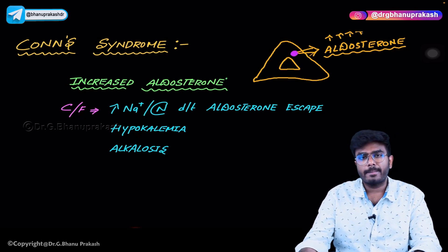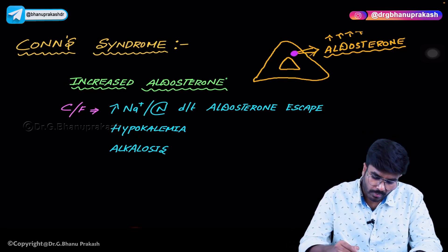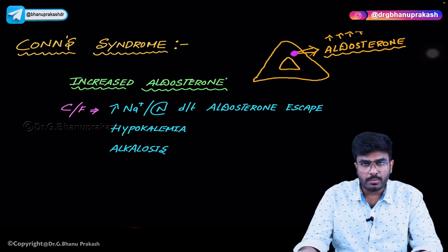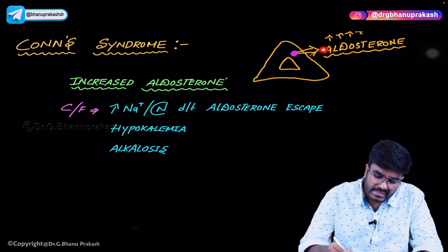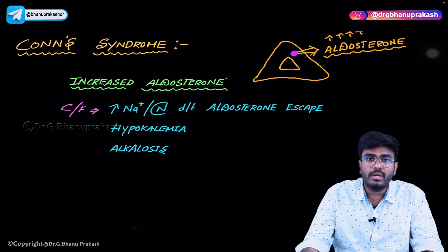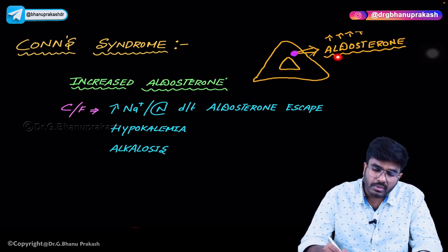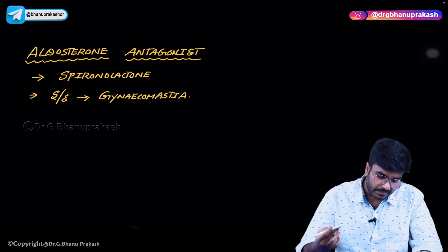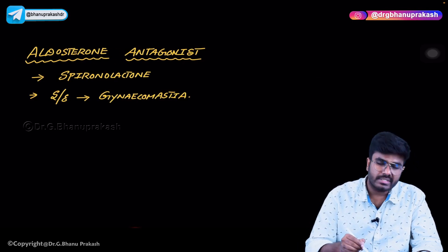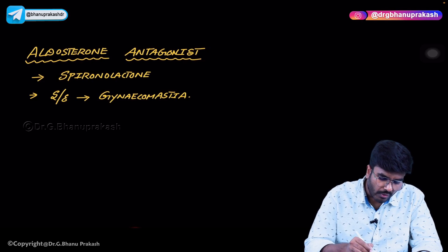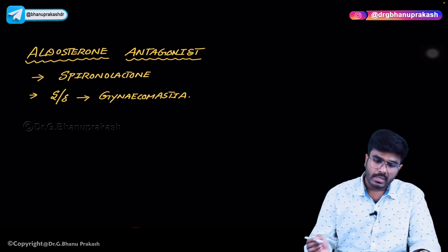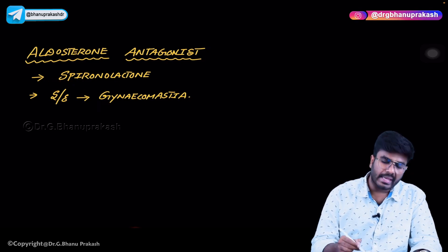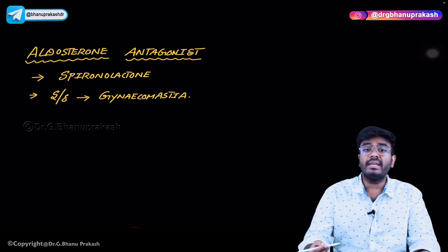Protons are being lost, causing alkalosis. To treat Conn's syndrome, surgical resection of the adenoma is the option, but when not possible, we can block the aldosterone receptors using aldosterone antagonists. The drug used is spironolactone, an aldosterone antagonist used in the treatment of Conn's syndrome. The most important side effect of spironolactone is gynecomastia, which has been asked many times in exams.